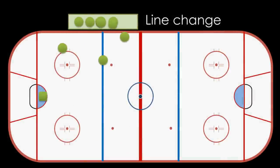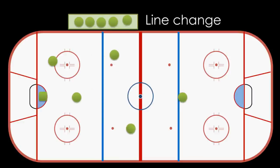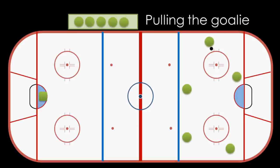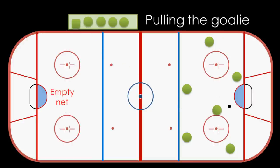When one line goes to the bench and another jumps onto the ice, this is called a line change. At certain points in the game, you might see a team do something called pulling their goalie, which means the goalie skates to the bench and a sixth skater takes his place on the ice. This leaves their net without a goalie — what we call an empty net. This usually only happens when a team is losing by a goal late in the game and they need to score to avoid losing, so they pull their goalie and go for broke with that extra skater.